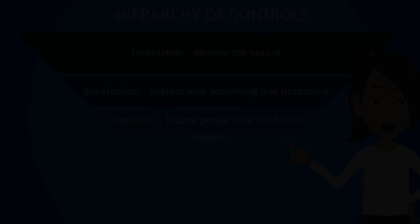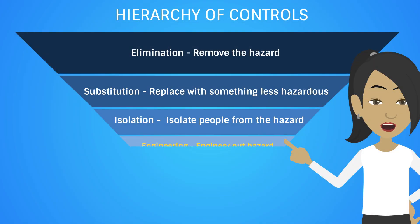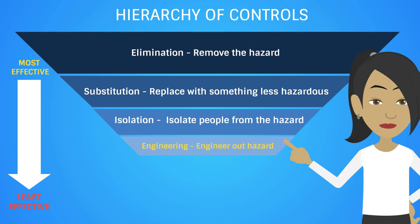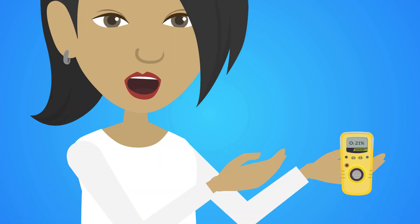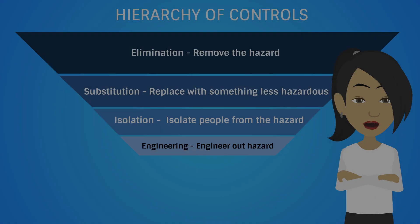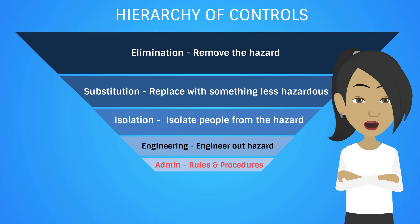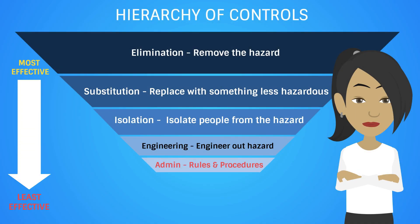The following most effective control is engineering. Examples of this are machine guards, ventilation systems, and smoke or gas detection devices. Next on the Hierarchy of Controls is administrative controls.